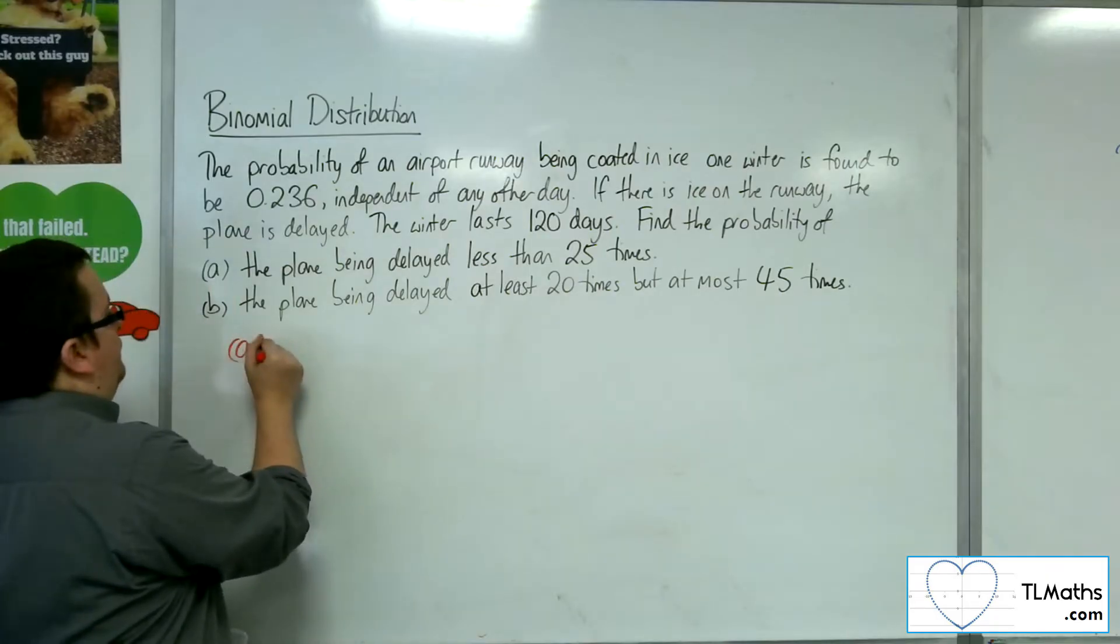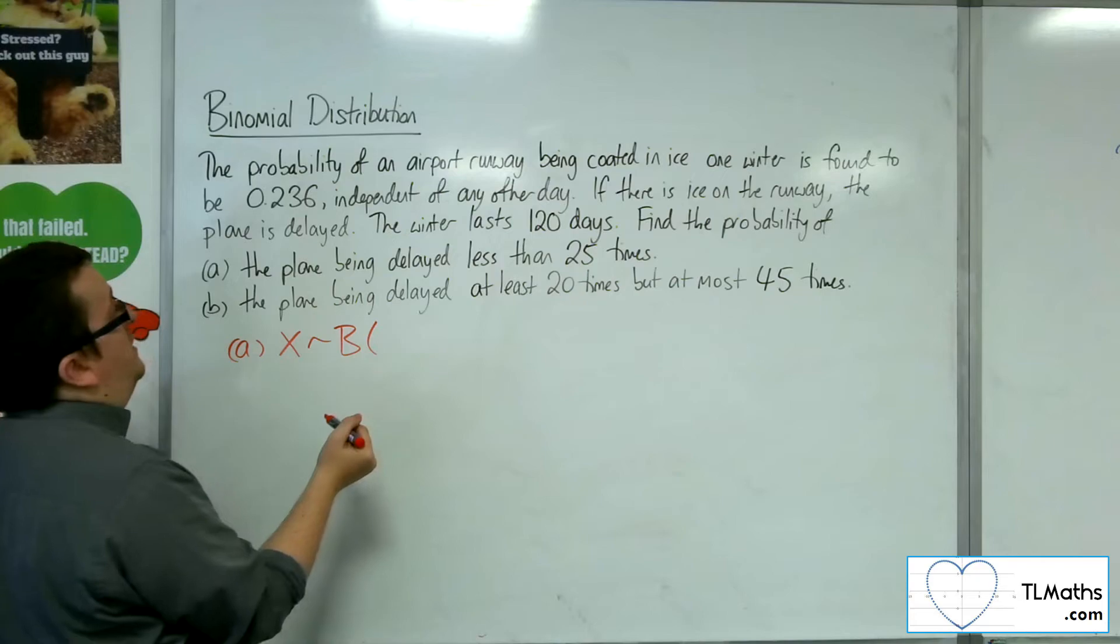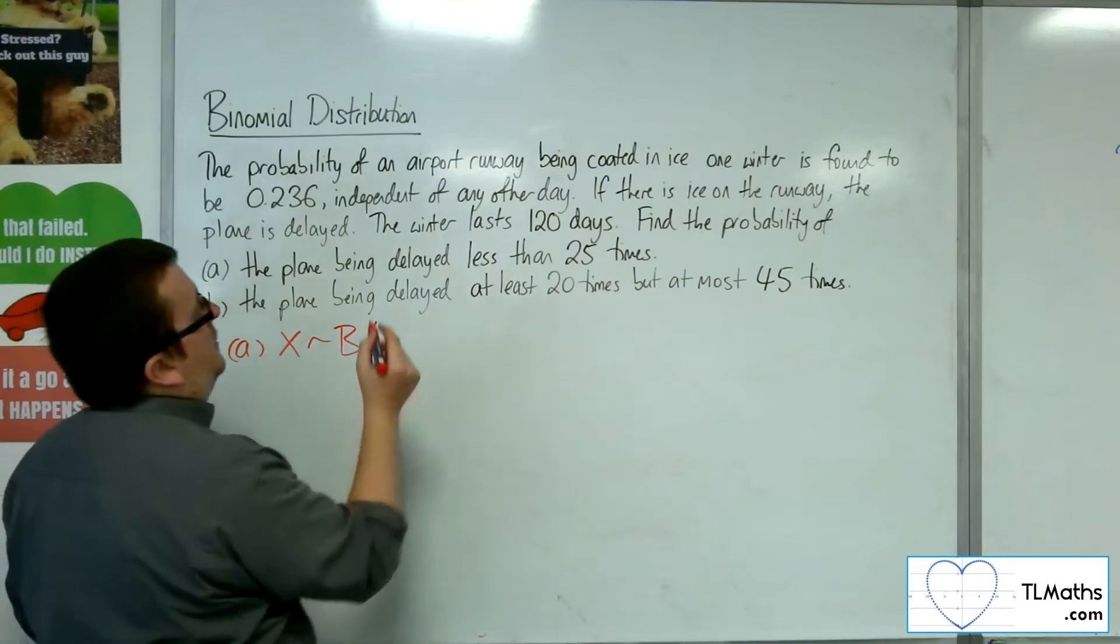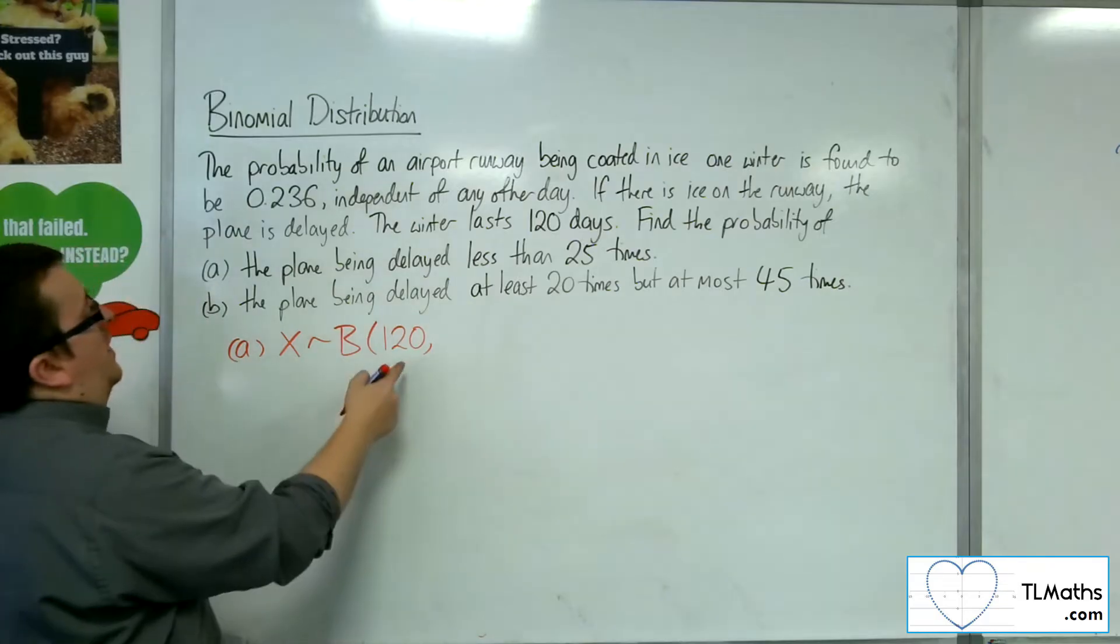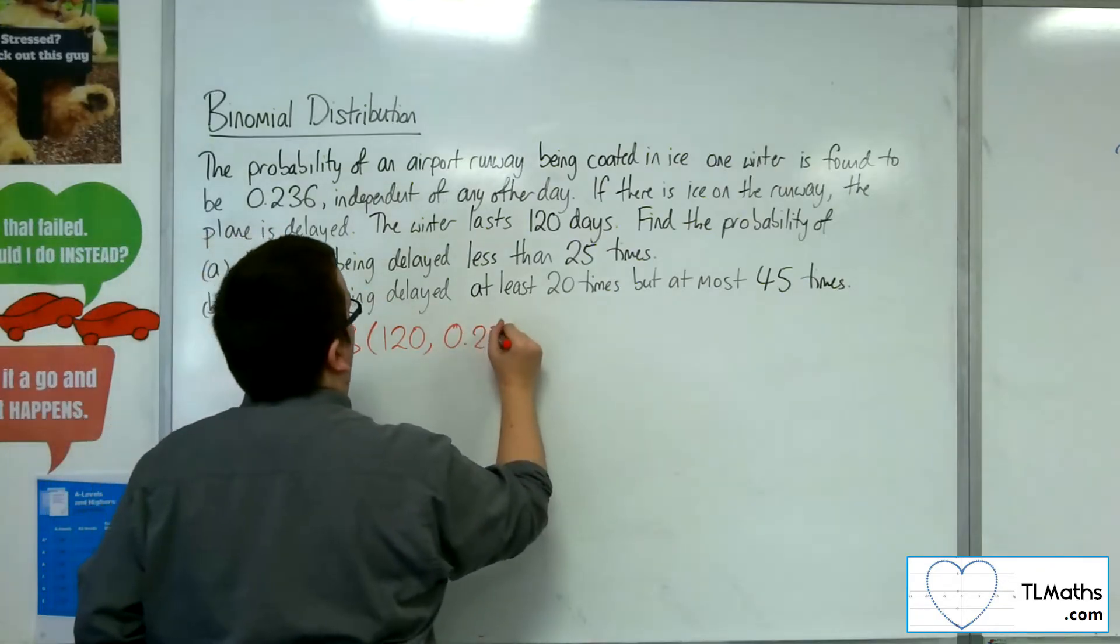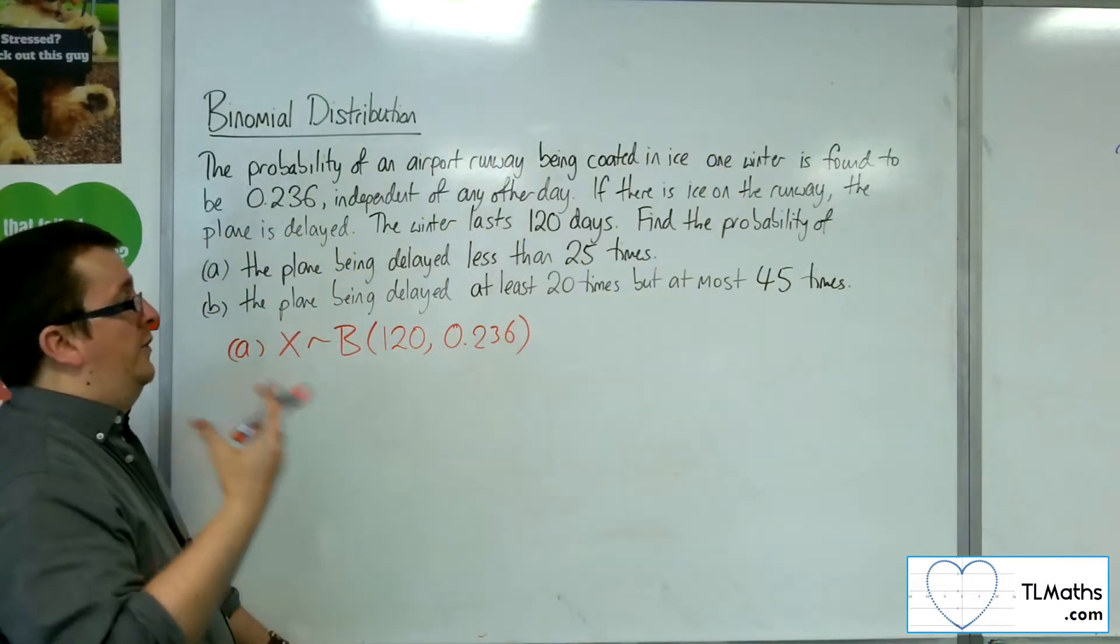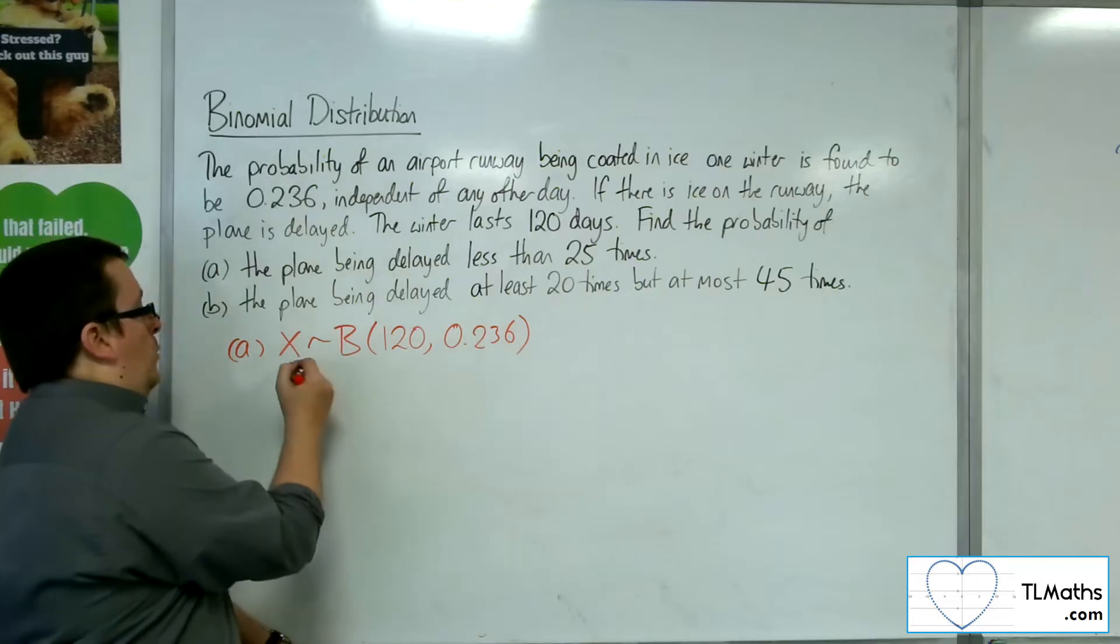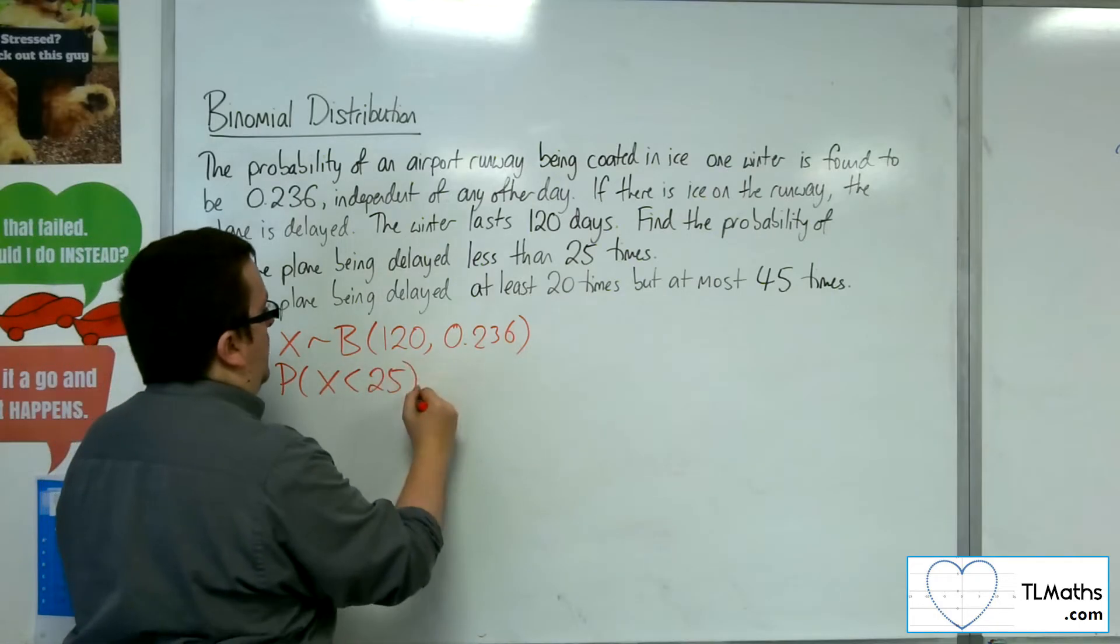So for A, we've got X being binomially distributed with N equals 120, 120 days, and a probability of success being 0.236. So that's the probability of the runway having ice on it and so causing a delay. What is the probability of X being less than 25?